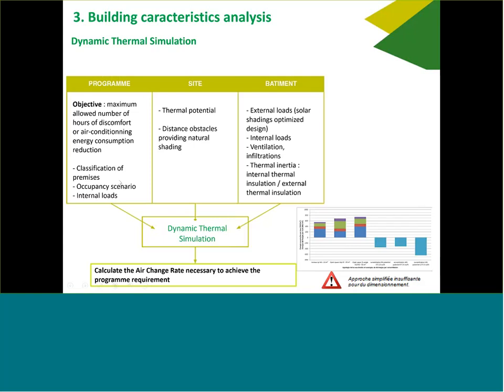In your dynamic thermal simulation, you look at external loads, solar shading — that's really the most important. Look at internal loads, ventilation, infiltration, thermal inertia, and where you put your insulation. Thermal inertia: you always need it, but do you want it inside — which is good for offices to delay the peak temperature — or maybe insulation inside in the bedroom, because you will very quickly decrease the temperature at night. You run all that in your software, and basically you just want one output at the end: how much air change rate do I need to achieve the program requirements? It's an iterative process: you start with three air changes per hour, you see you still have 250 hours of discomfort — that's not enough. Then you try five, maybe six air changes per hour, and when you are within the good range, that's what you need.